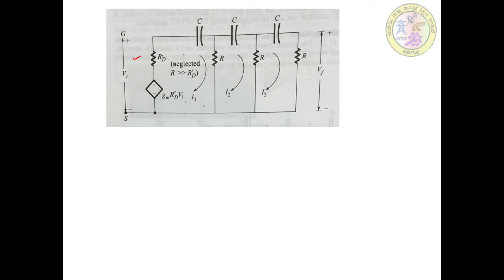We also need to consider individual loop currents. The equivalent circuit forms three loops with currents I1, I2, and I3. The feedback voltage VF is given by I3 into R. To find VF we need to compute I3, which requires writing three loop equations. Since there are three unknowns, we use Cramer's rule after writing the linear equations in matrix form.